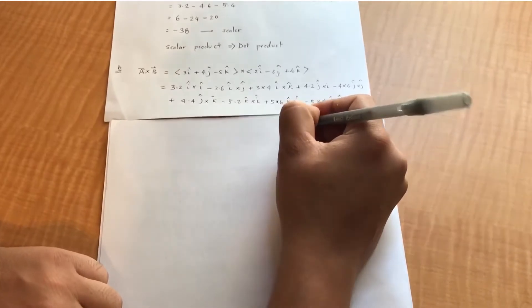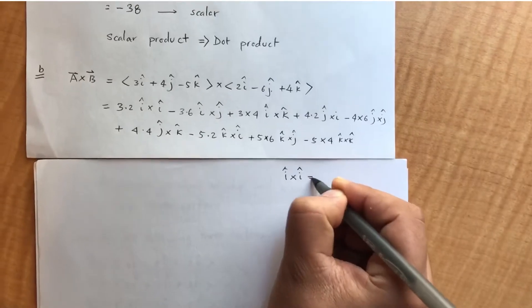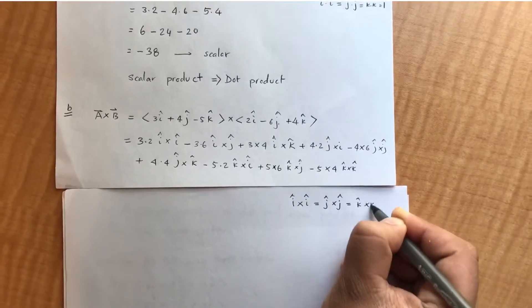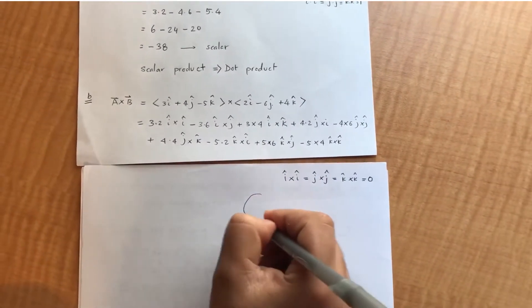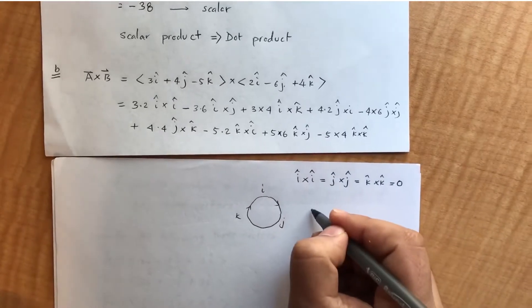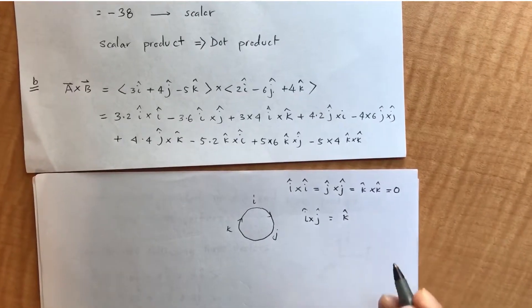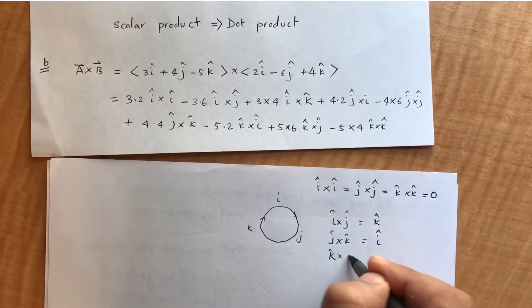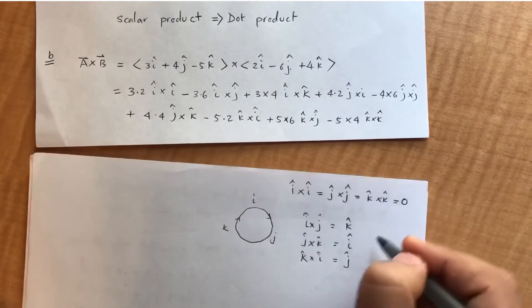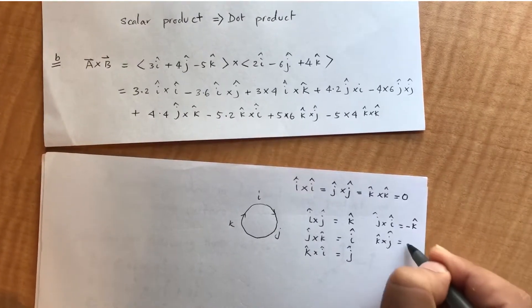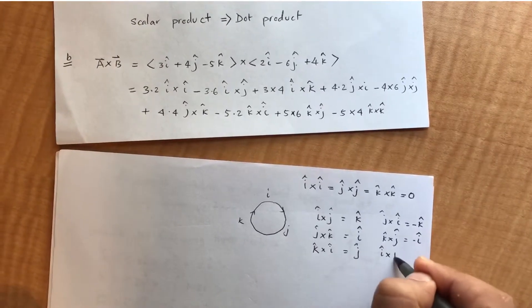You should know that i cross i = j cross j = k cross k = 0. For the cyclic permutation of unit vectors: i cross j = k, j cross k = i, and k cross i = j. If you reverse the order, you get the negative: j cross i = −k, k cross j = −i, and i cross k = −j.